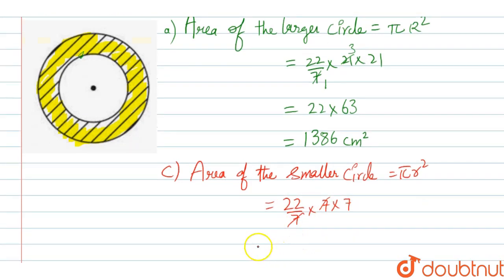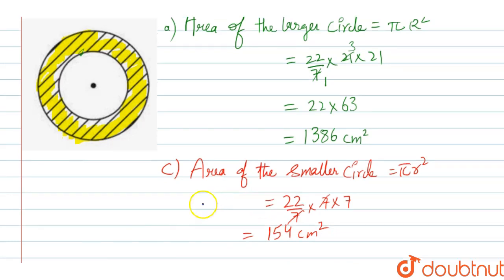we can cancel out and the final answer will be equals to 154 cm square. So this is our area of the smaller circle, that means area—basically this is subpart B, not subpart C.